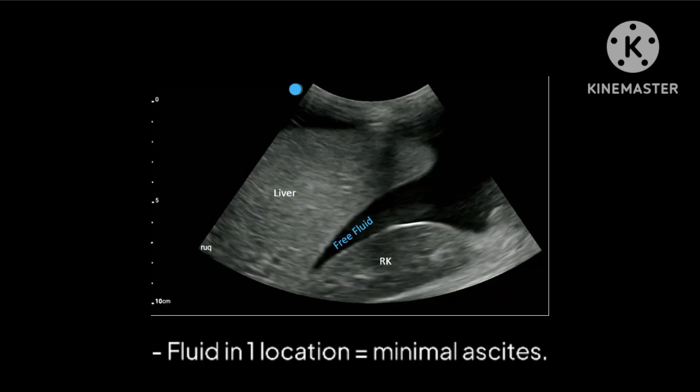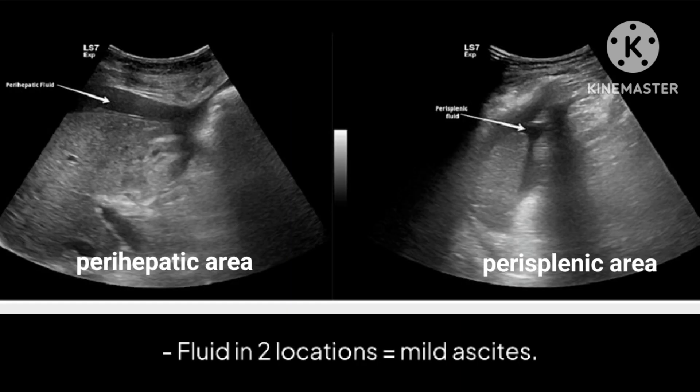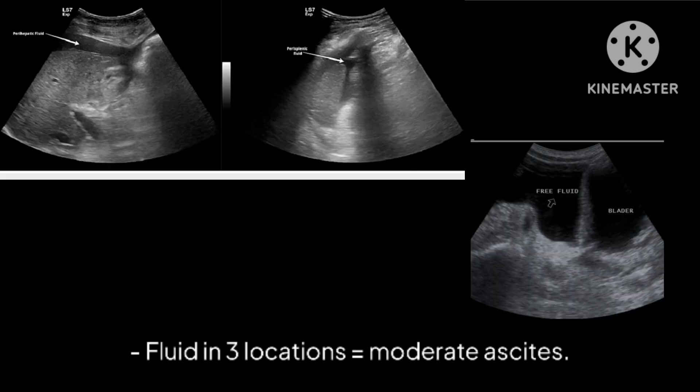Fluid in one location equals minimal ascites. Fluid in two locations equals mild ascites. Fluid in three locations equals moderate ascites. Fluid in four locations equals marked ascites. Fluid in five locations equals massive ascites.